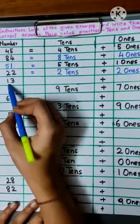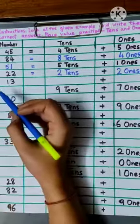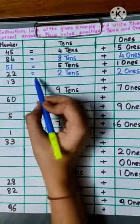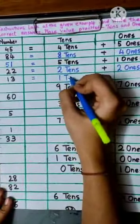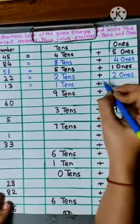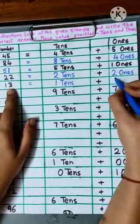Our next number is 13. So we know that in 13 there is 1 tens, and how many ones? 3 ones.